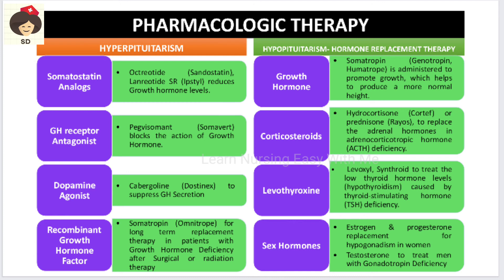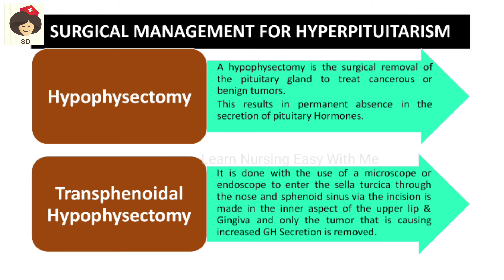In hypopituitarism, growth hormone replacement — somatotropin, available as genotropin and humatrope — helps increase growth hormone levels. Corticosteroids such as hydrocortisone or prednisone are given to replace adrenal hormones. Levothyroxine (Levoxyl, Synthroid) is given to treat low thyroid hormones in TSH deficiency. Sex hormones — estrogen and progesterone — are replaced in women with pituitary hypofunction, and testosterone is given to men for gonadotrophin deficiency.